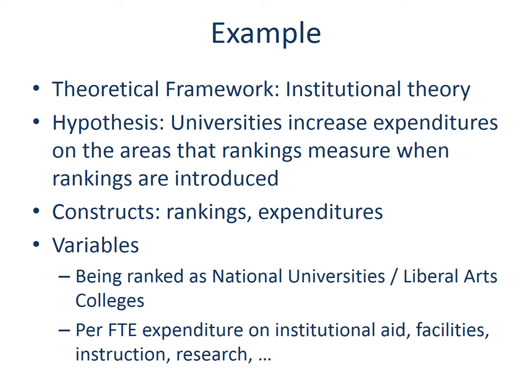I applied institutional theory, which explains that organizations comply with the powerful system that defines what legitimate organizations should look like in a field. Based on the theory, I hypothesize that universities will increase expenditure in the areas that rankings measure when the ranking system is introduced. The constructs are rankings and expenditures. The variables are whether an institution is ranked or not, as well as per full-time equivalent student expenditure on different activities. You can see how the design of the study was shaped by the theory employed.